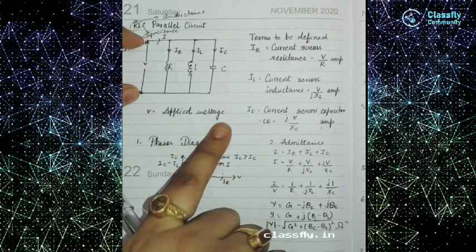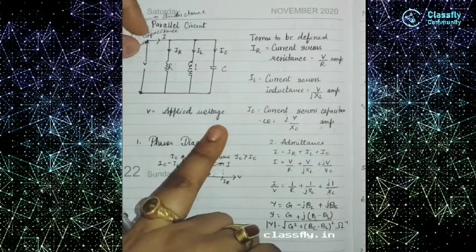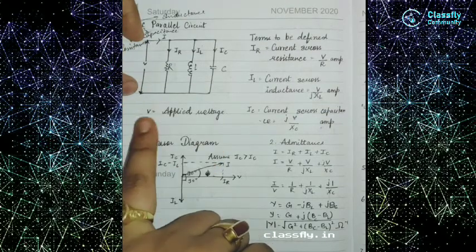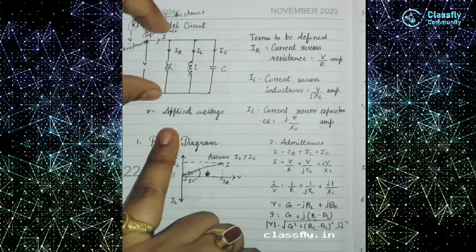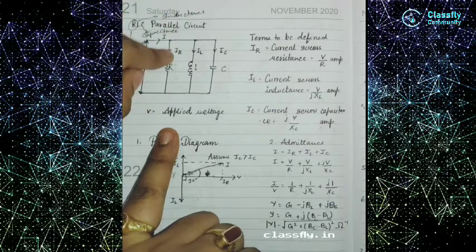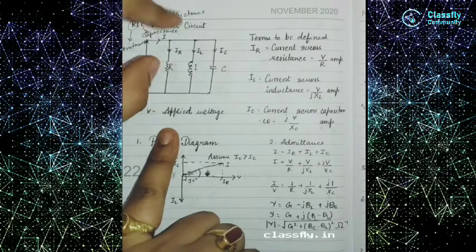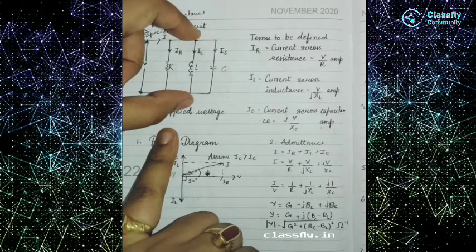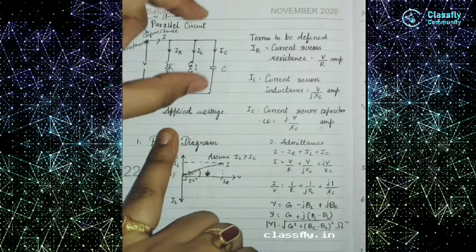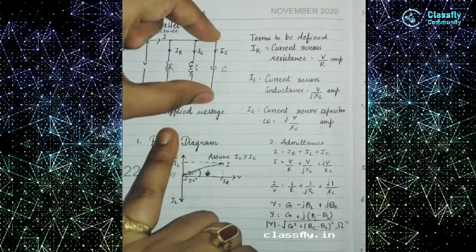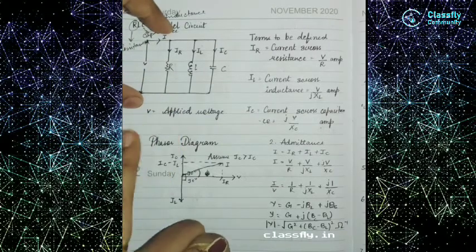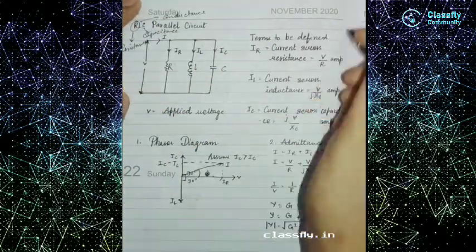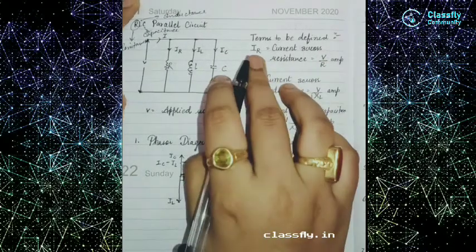The applied voltage V will be provided and the current I will be divided. The current across the resistance is IR, the current across the inductor is IL, and the current across the capacitor is IC. Now let's move on and define all the terms.